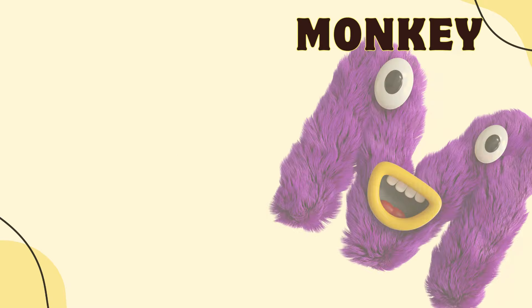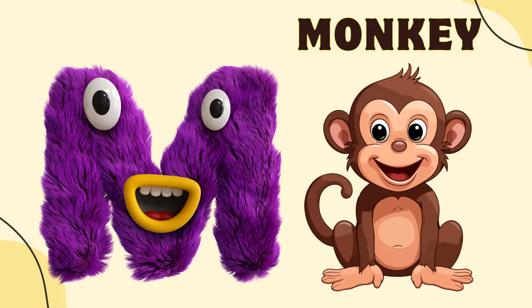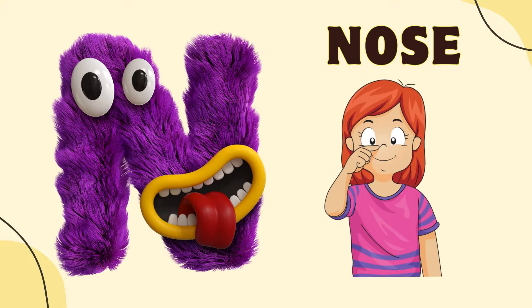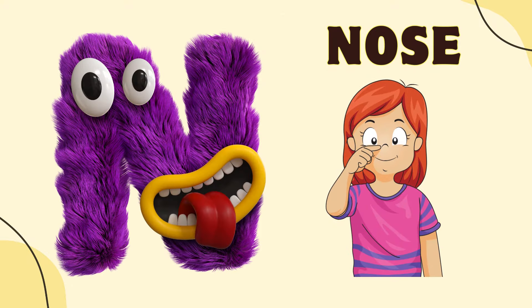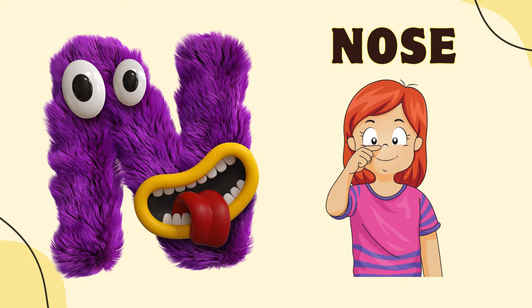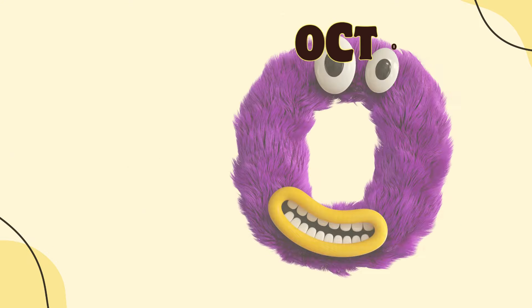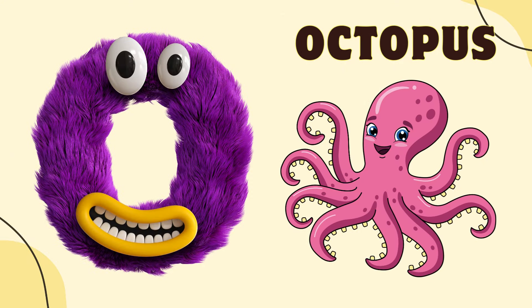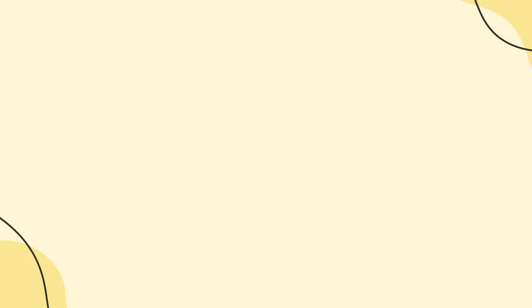M is for Monkey, M-M-Monkey. N is for No, N-N-No. O is for Octopus, O-O-Octopus.